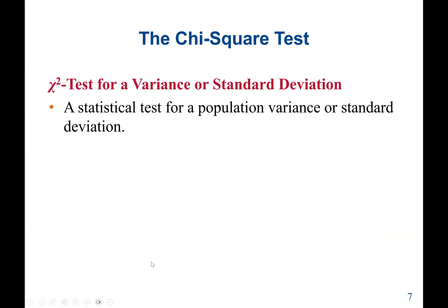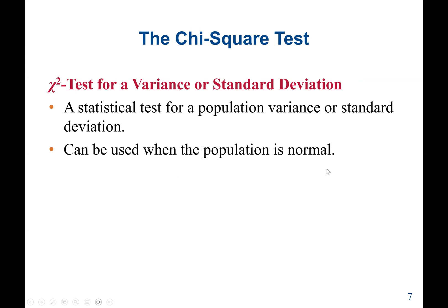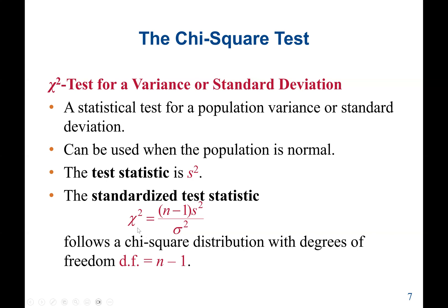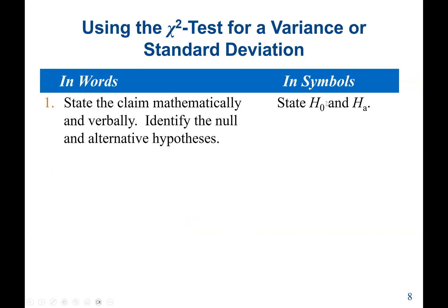To find a critical value, we always need two items: the sample size and the alpha value. For the chi-squared test for variance or standard deviation, this is a statistical test for a population variance or standard deviation that can be used when the population is normally distributed. The test statistic formula is chi-squared equals (n minus 1) times S-squared divided by sigma-squared, and the degree of freedom is n minus 1.